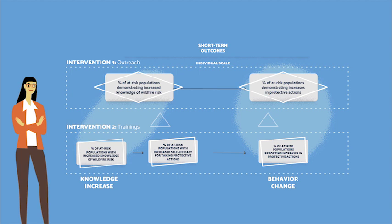The short-term outcomes column expands to reveal two interventions. The outreach intervention, encircled in a dashed line with a diamond shape, includes boxes for increases in protective actions and increased knowledge of wildfire risk. The trainings intervention, encircled with a rectangle shape, includes three boxes: increased knowledge of wildfire risk, increased self-efficacy for protective actions, and increases in protective actions, with 'knowledge increase' and 'behavior change' labeled beneath relevant boxes.